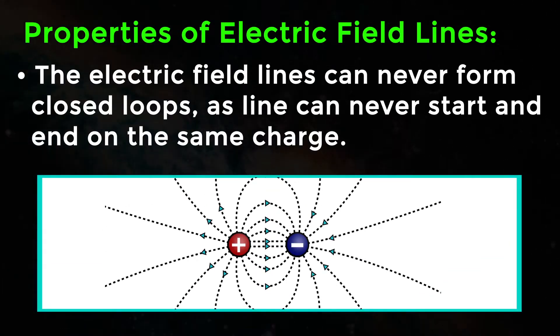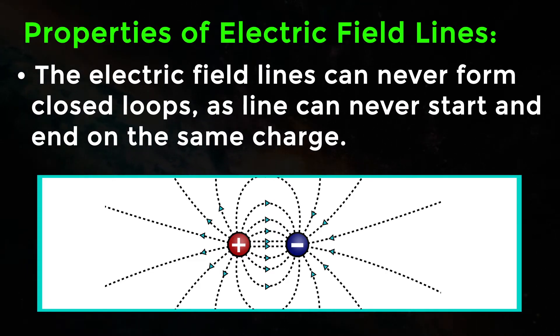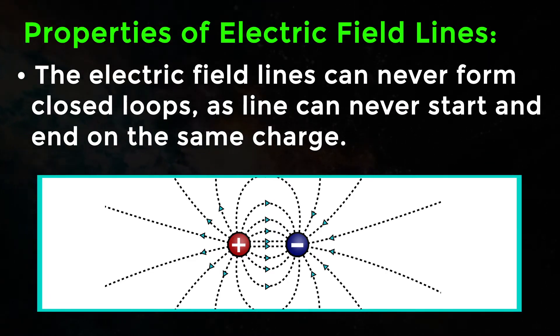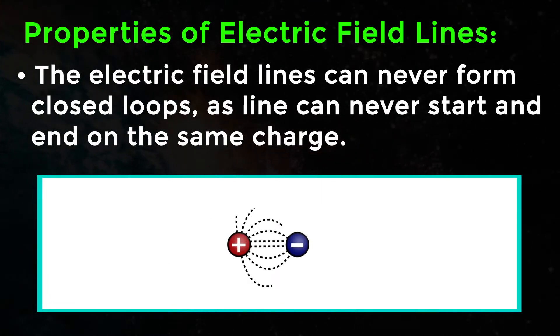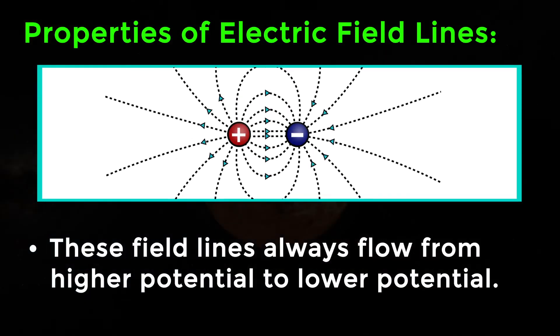The electric field lines can never form closed loops as line can never start and end on the same charge. These field lines always flow from higher potential to lower potential.